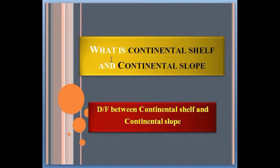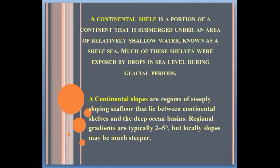Today we talk about what is continental shelf and continental slope, and also the difference between them. A continental shelf is a portion of a continent that is submerged under an area of relatively shallow water known as a shelf sea. Much of these shelves were exposed by a drop in sea level during glacial periods.